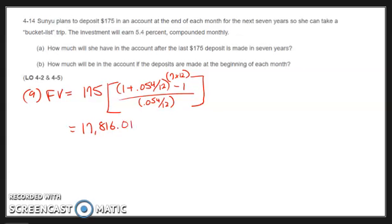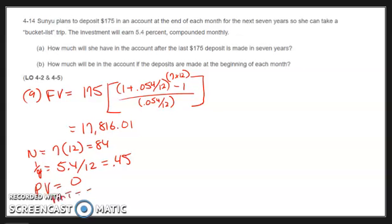On a calculator, seven times twelve is 84 months. Since it's monthly, we've got to make it a monthly rate, so 5.4 divided by 12 is 0.45. There's nothing in the account to begin with, PV is zero. Payment is $175 entered as negative. Compute future value: $17,816.01.